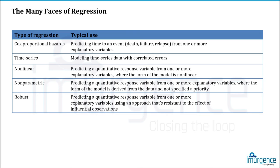Non-linear regression predicts a quantitative response variable from one or more explanatory variables where the form of the model is non-linear. Non-parametric regression predicts a quantitative response variable from one or more explanatory variables where the form of the model is derived from the data, not from a specified distribution — used when we don't know anything about the data. Robust models predict a quantitative response variable using an approach that is resistant to the effect of influential observations.